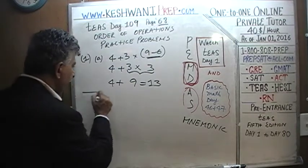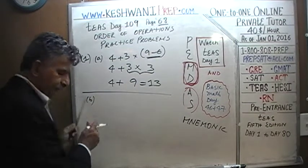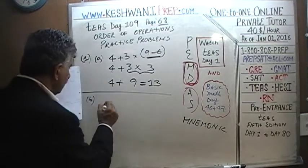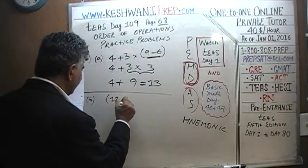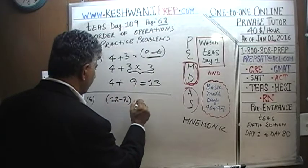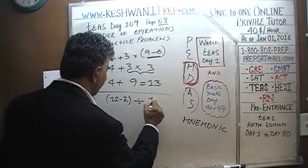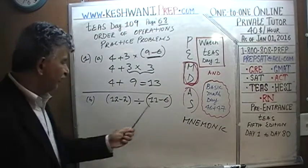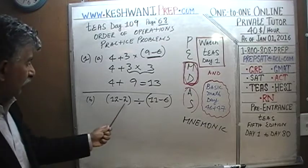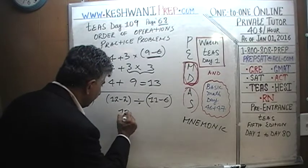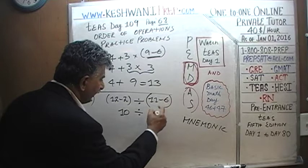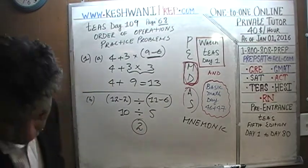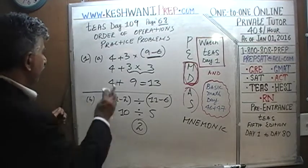Let's do part B: (12 minus 2) divided by (11 minus 6). We do our parentheses first. 12 minus 2 is 10, and 11 minus 6 is 5. So 10 divided by 5 is 2. A very simple, straightforward problem. Let's look at part C.